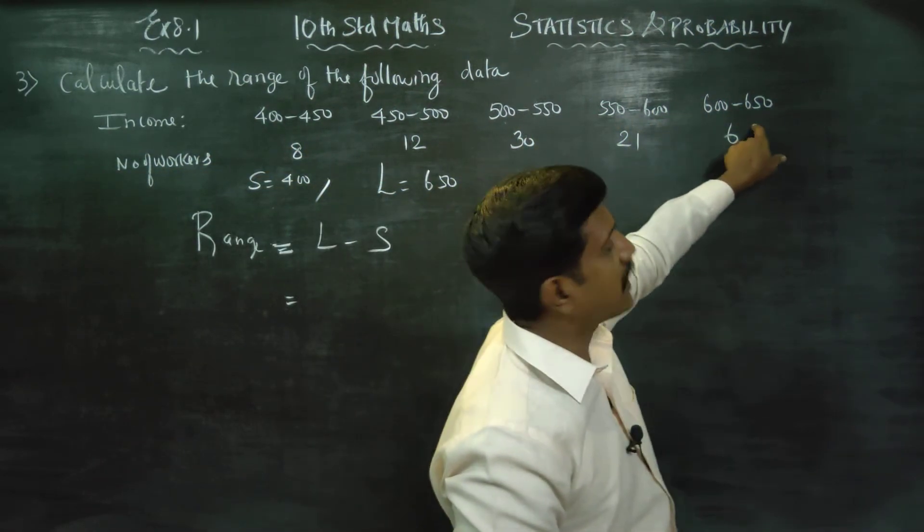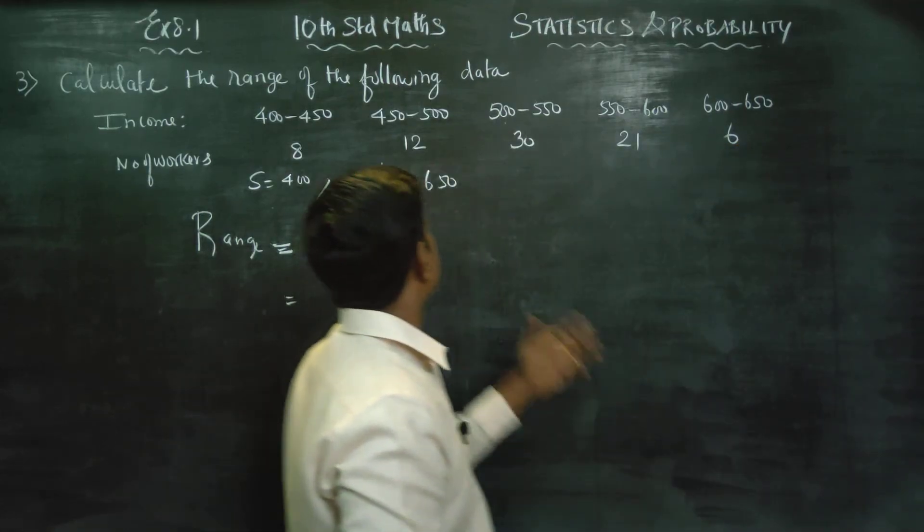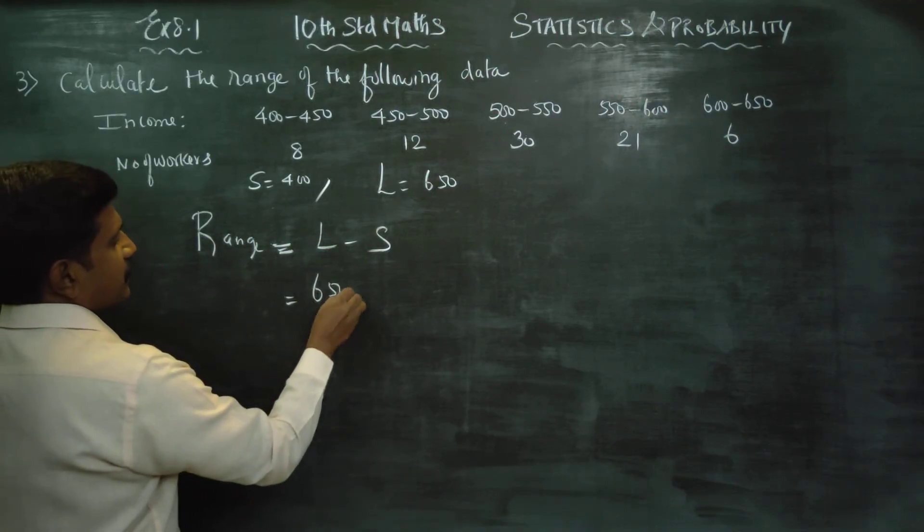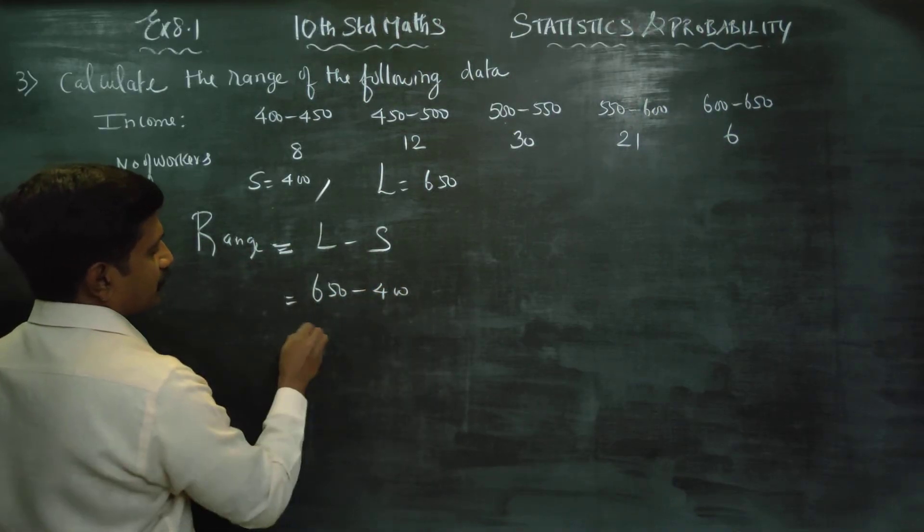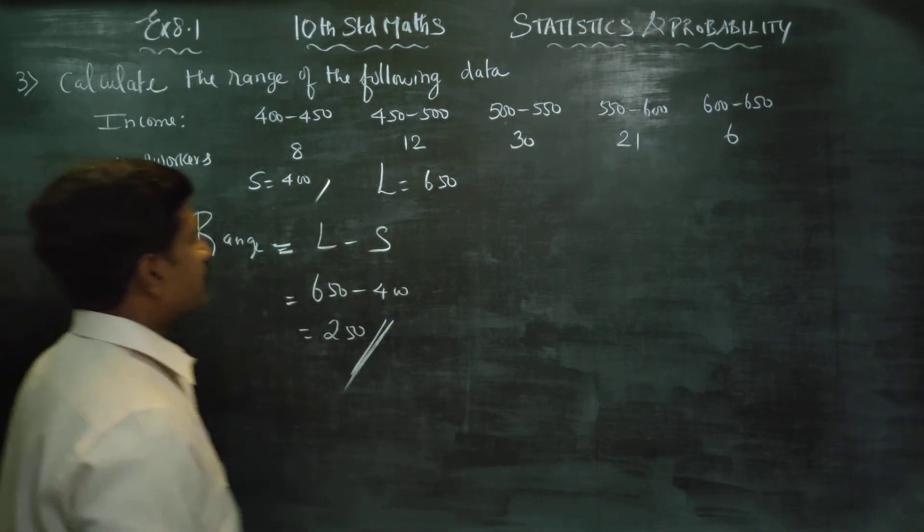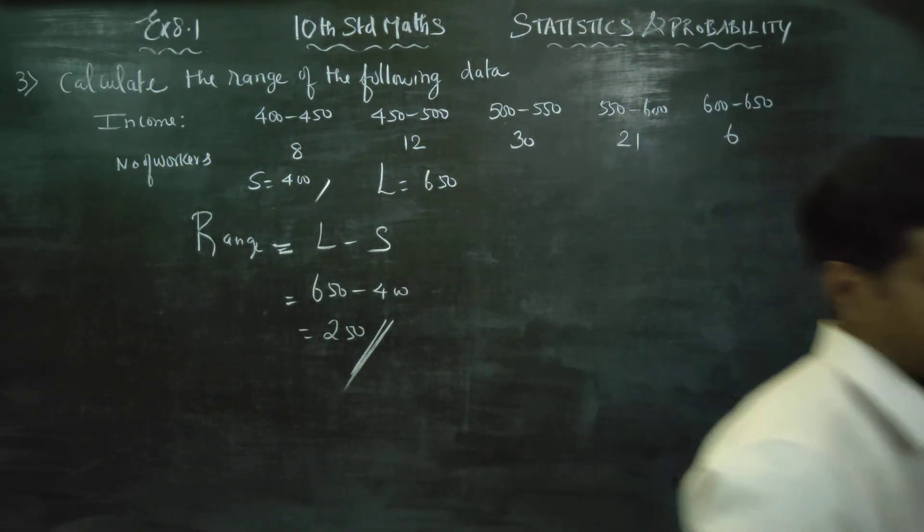And it goes on. The largest number is 650, it is the largest income. So everything ready? For 650 minus 400. Therefore your answer is 250. It will be the range of this sum.